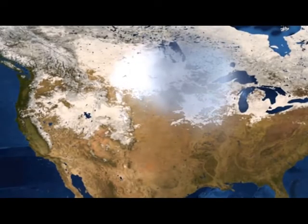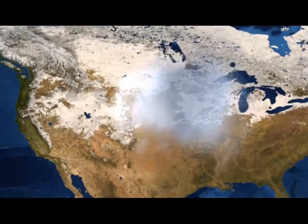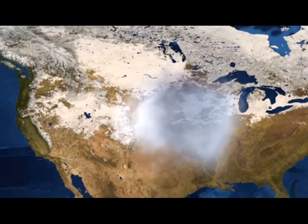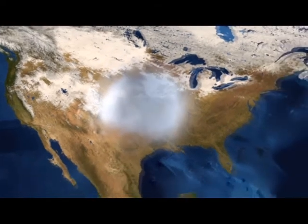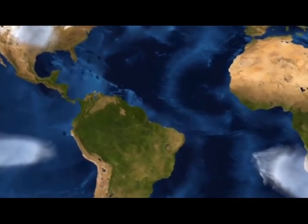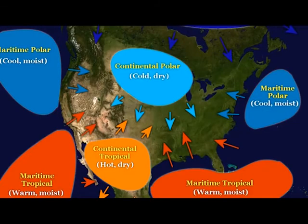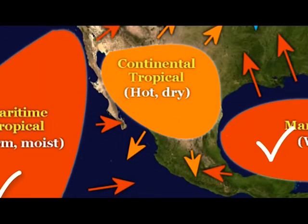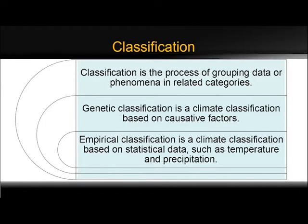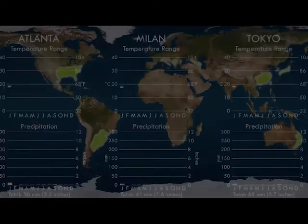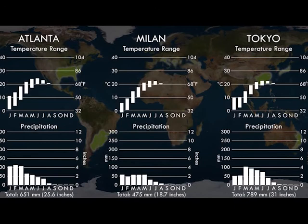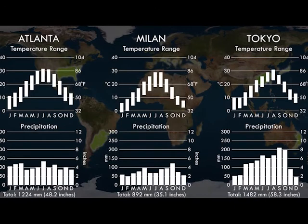Classification is the grouping of data or phenomena into related categories. Genetic classification is a climate classification based on causative factors. Empirical classification is a climate classification based on statistical data such as temperature and precipitation. For example, genetic classification asks what kind of air mass produces rain in Atlanta, Georgia during the summer versus the winter. Empirical classification asks how much precipitation occurs in the summer and how much occurs in the winter, regardless of what is causing it.